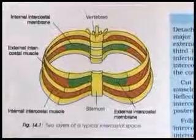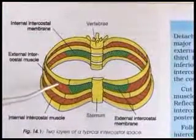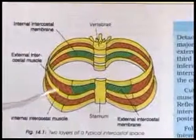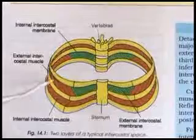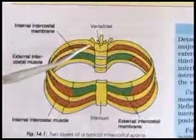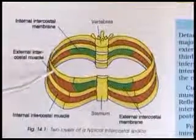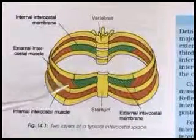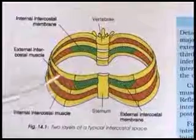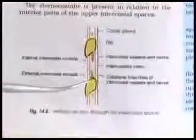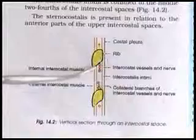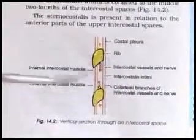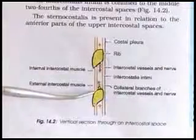The muscles are external intercostal, internal intercostal, and innermost intercostal. The external intercostal extends from the tubercle of the rib behind to the costal chondral junction anteriorly. The direction of fibers is antero-inferiorly. It arises from the lower border of the rib above to the rounded outer lip of the upper border of the rib below. It is continuous with the external intercostal membrane.